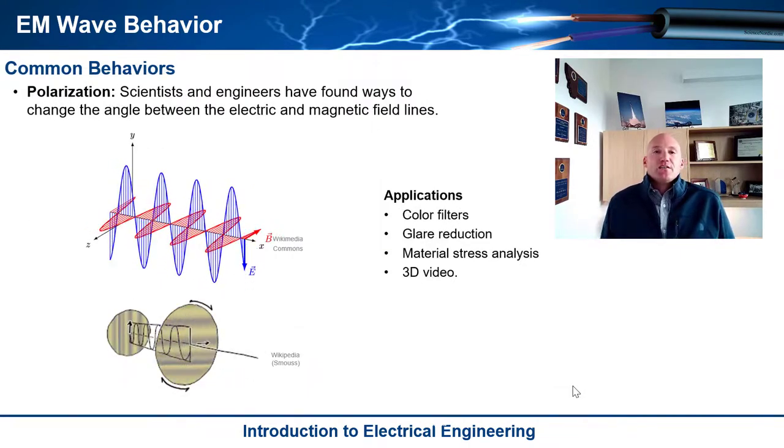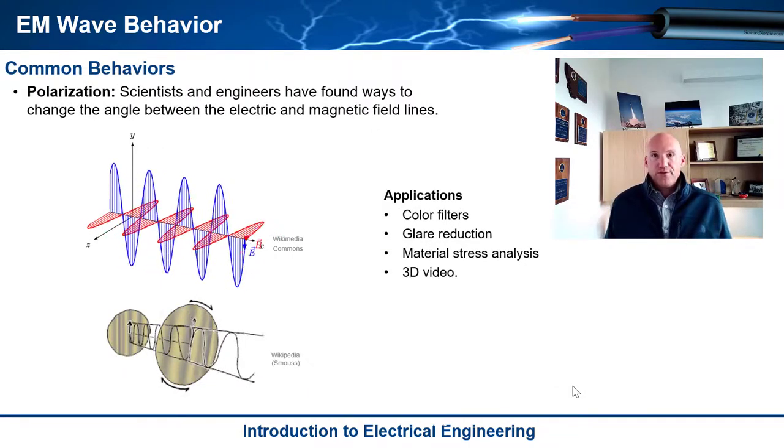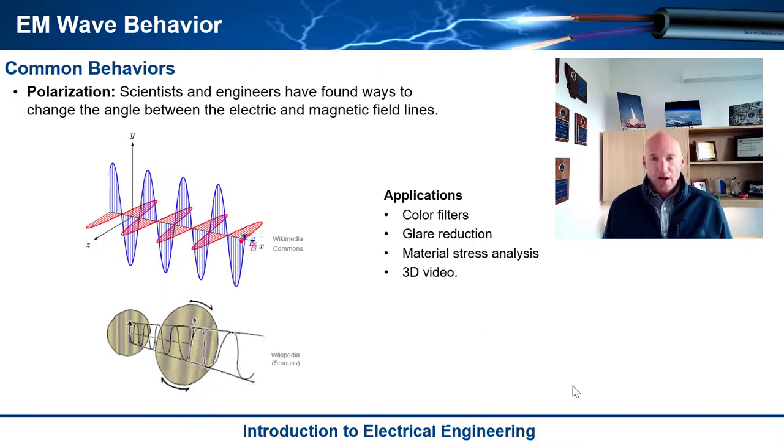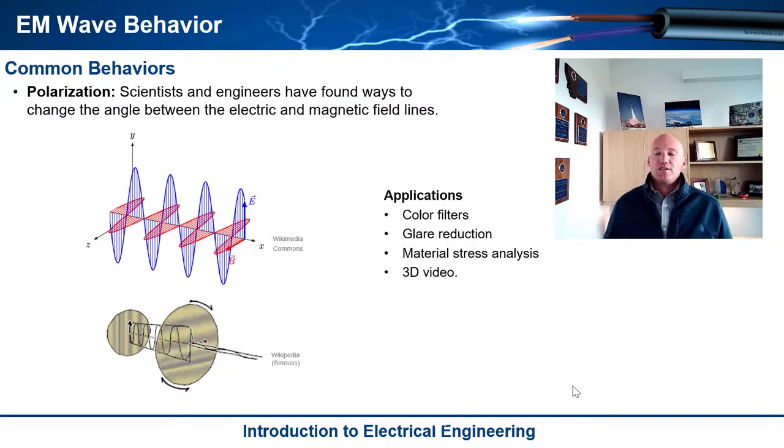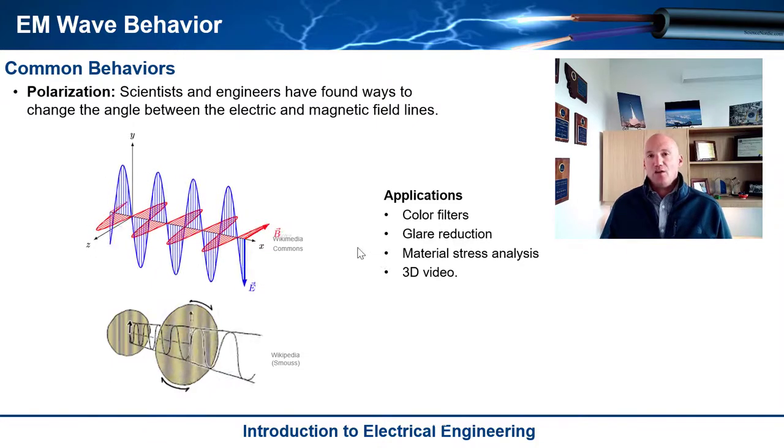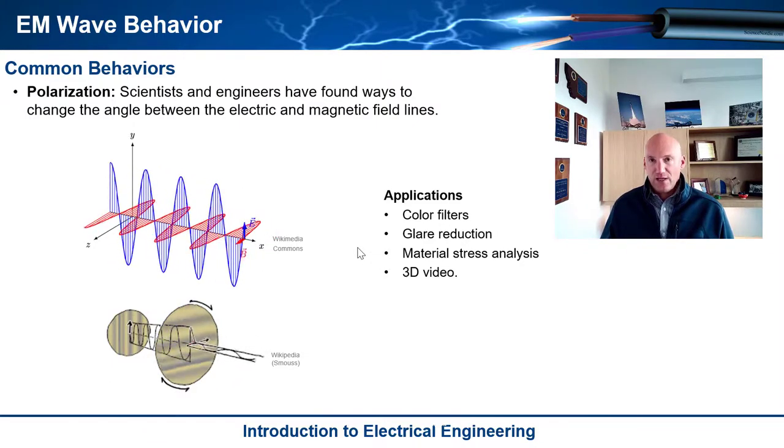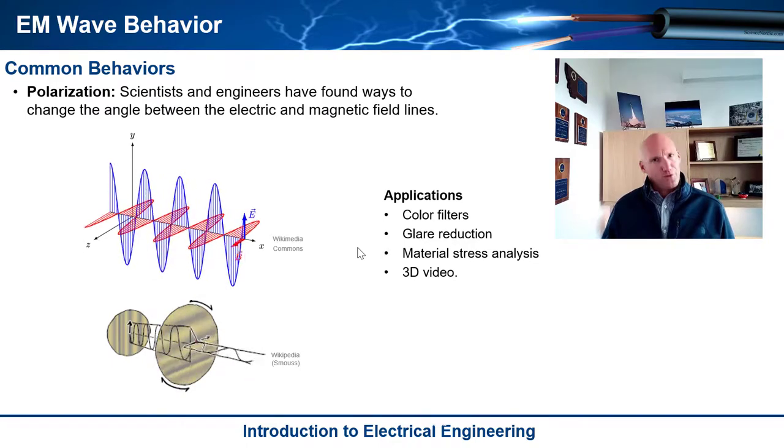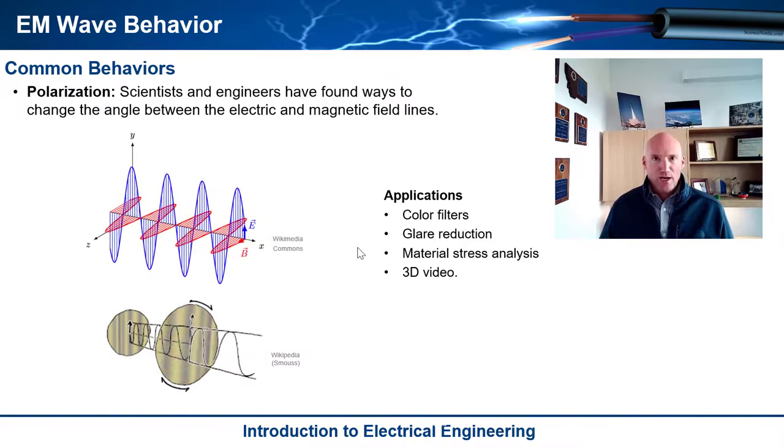Some of the things that engineers and scientists have learned to do with electromagnetic waves is polarize them. And so what polarization is, is where you change the angle between the electric wave, electric field line or the electric field, the electric wave and the magnetic wave.